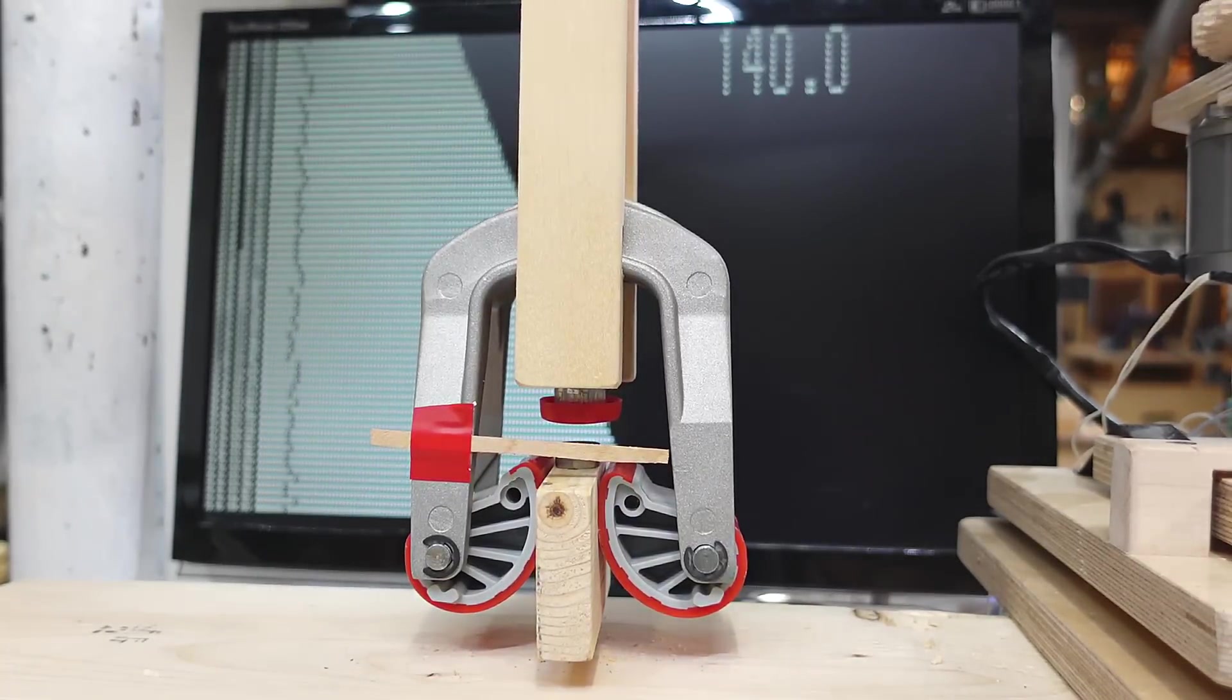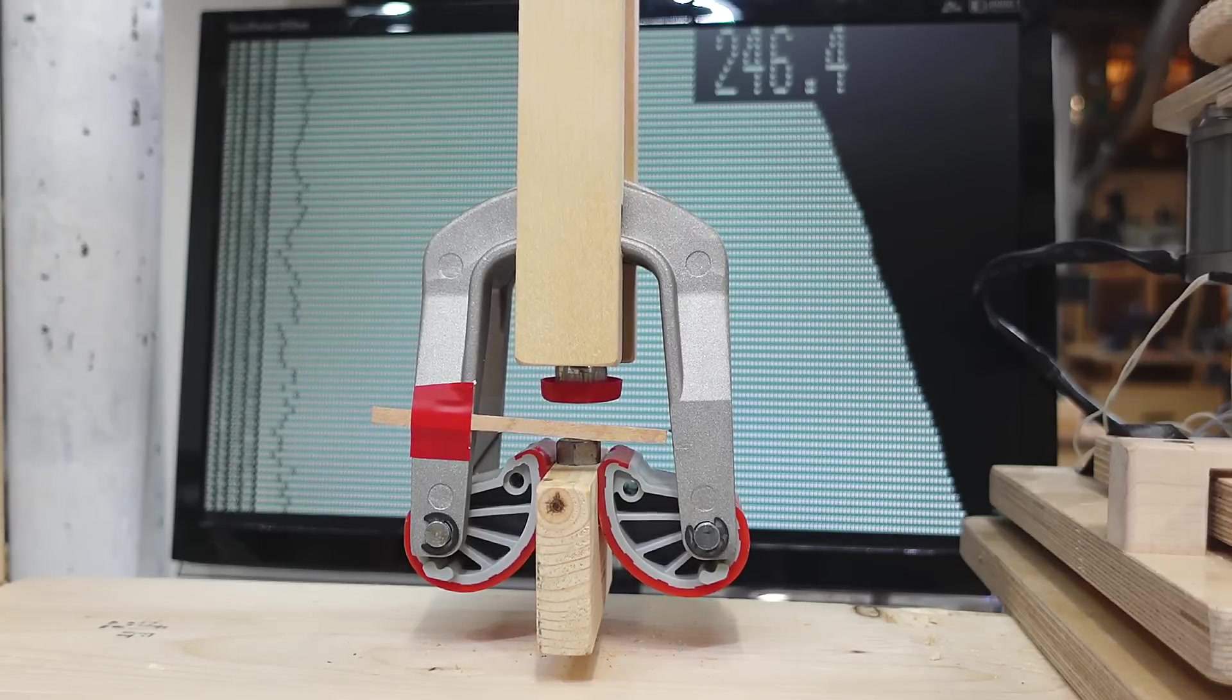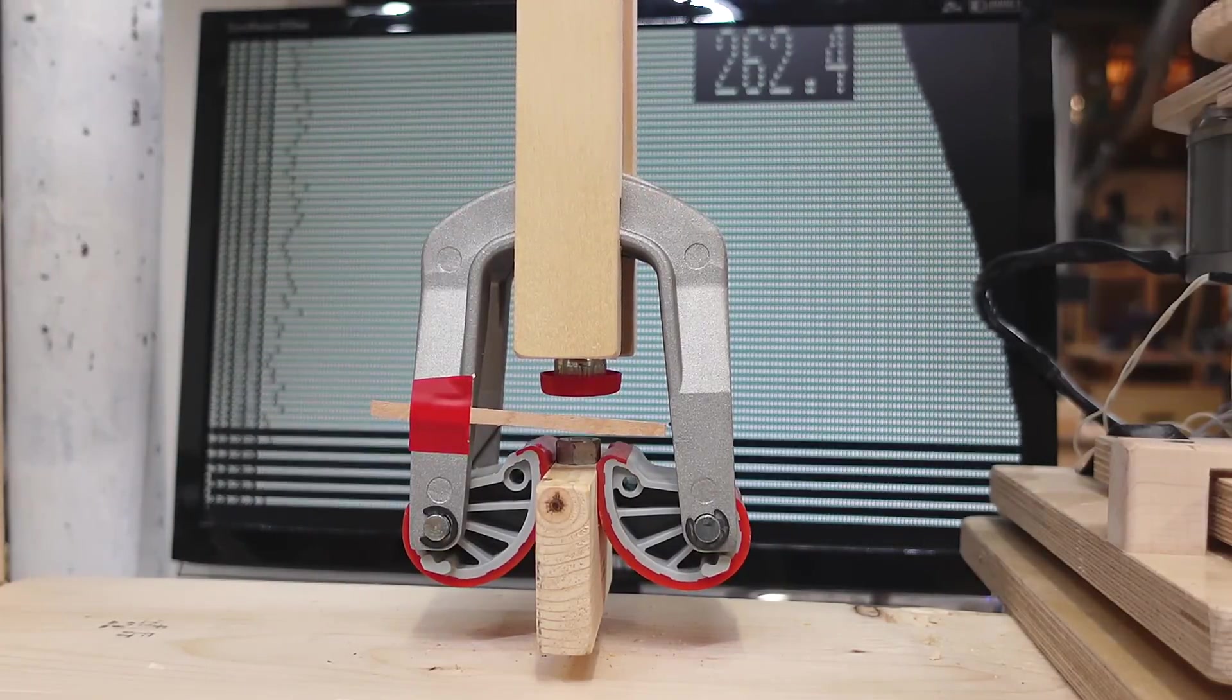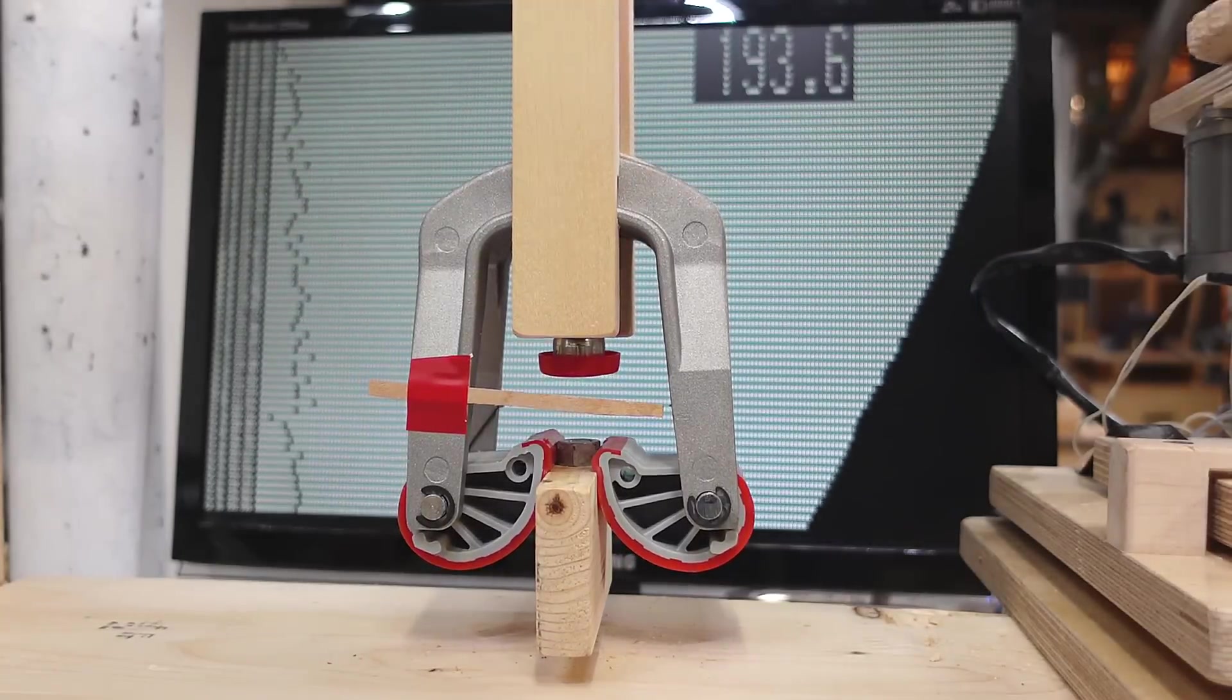Then I wanted to test the Bessie edge clamp frame to failure and I figured the easiest way would be just to clamp it on something and pull it off until it breaks but it took an awful lot of force and then it ended up sliding off so I guess that edge clamp frame won't break if it's actually being used as an edge clamp.